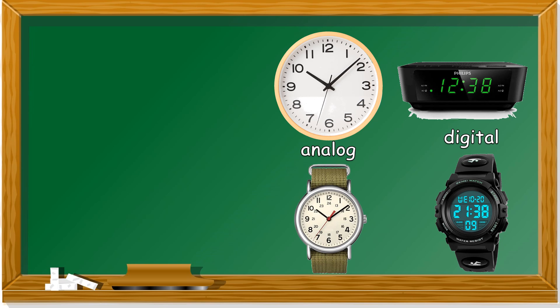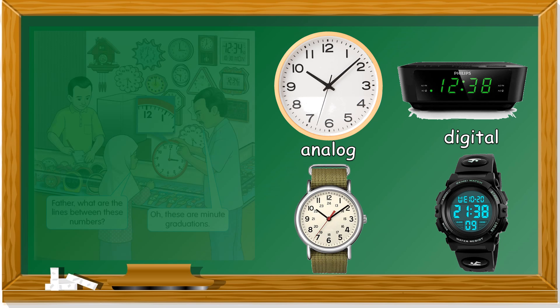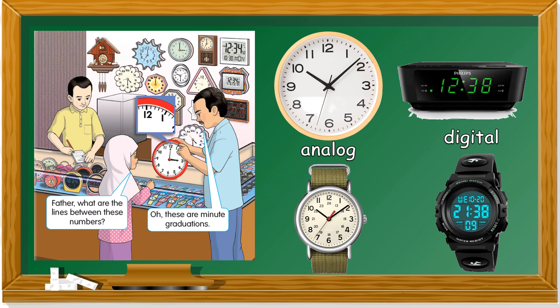Digital shows numbers. Let's take a look at this situation. A child asks: 'Father, what are the lines between these numbers?' The small lines on the clock are called graduations — minute graduations. You can only find minute graduations in analog clocks or watches.